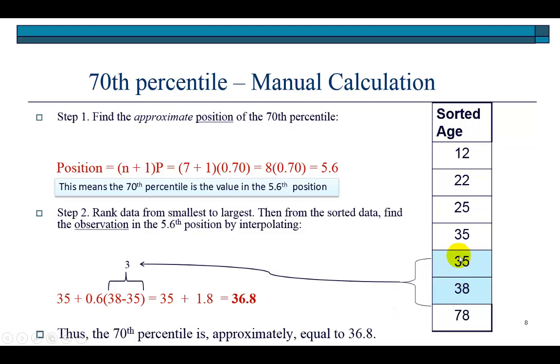The distance from 35 to 38 is 3, so there are 3 units of distance. We're going to go 6 tenths of that distance—0.6 times 3 equals 1.8. Therefore, the 5.6th position would be the value 36.8, which is 35 plus 1.8. So adding them together, 35 plus 0.6(38-35) equals 35 plus 1.8 equals 36.8. The 70th percentile is approximately 36.8.